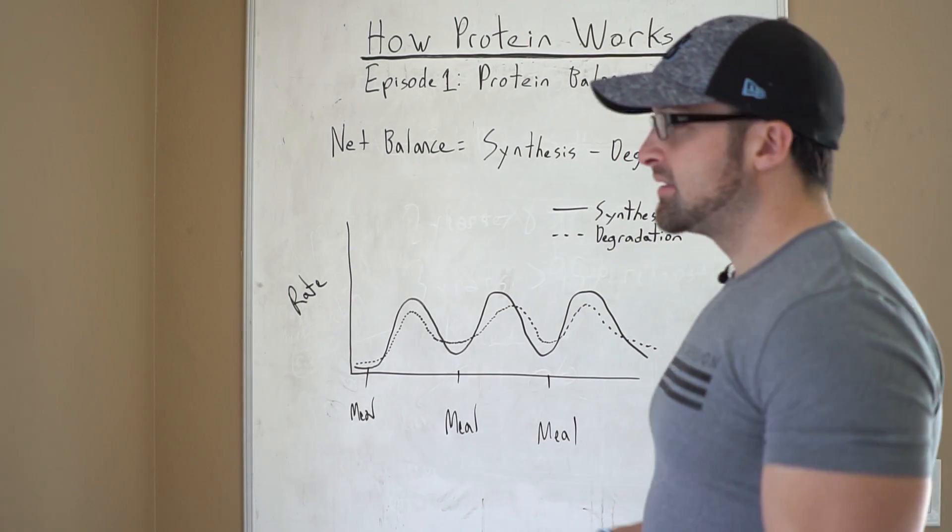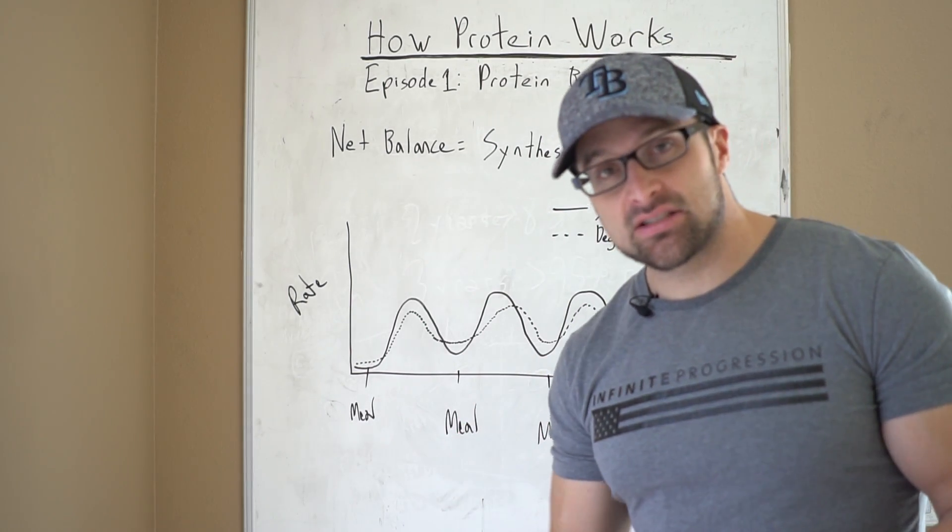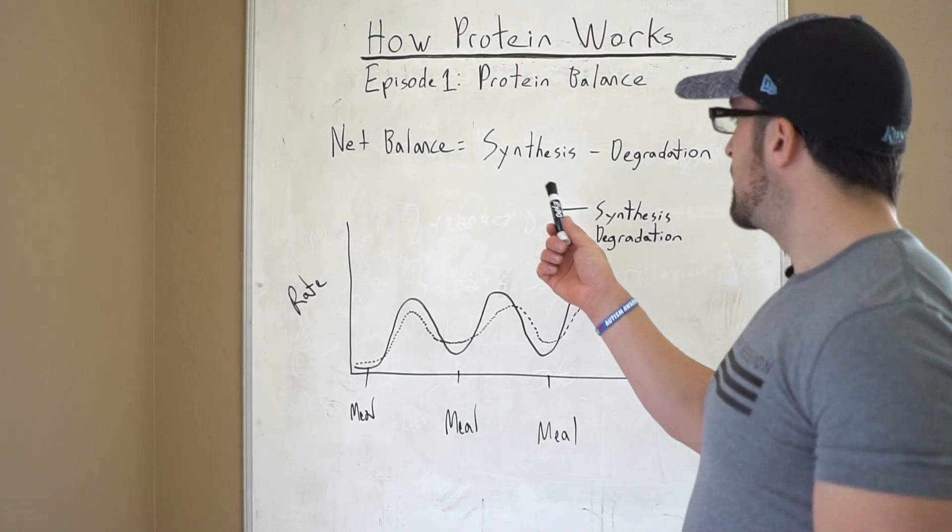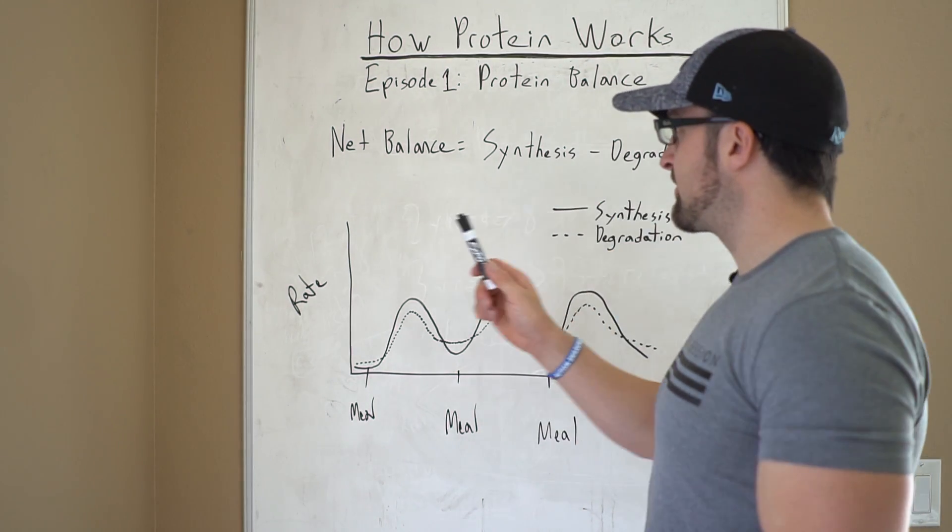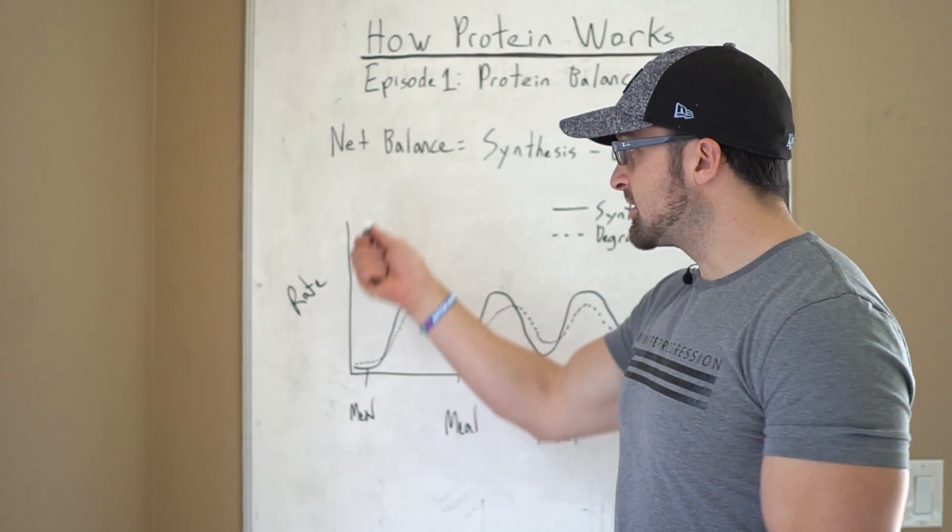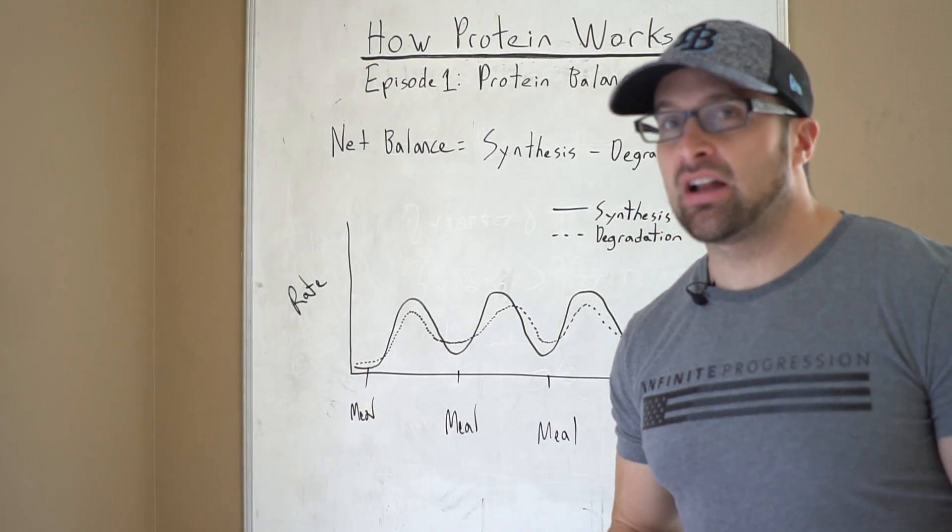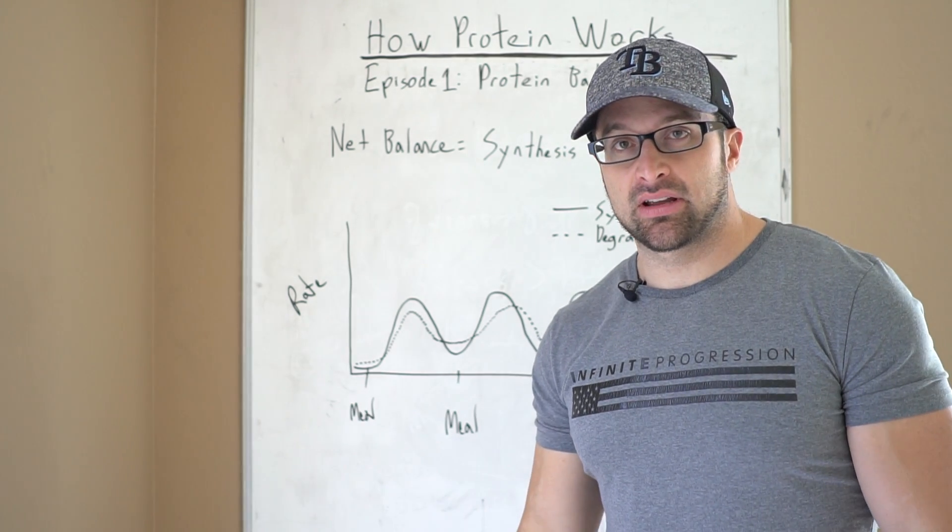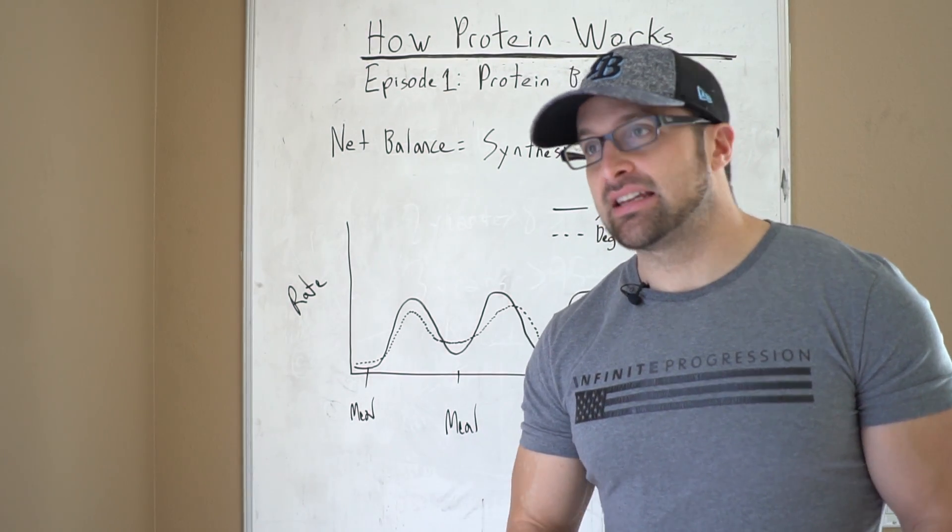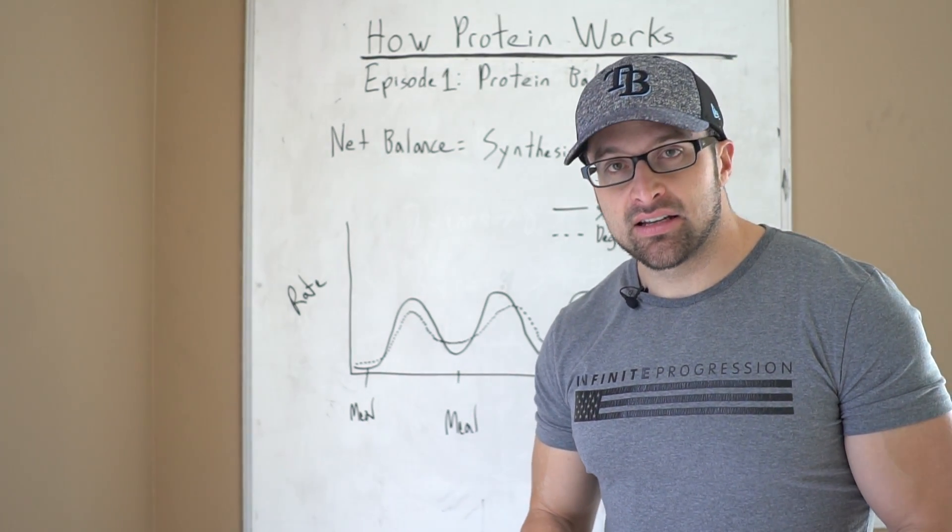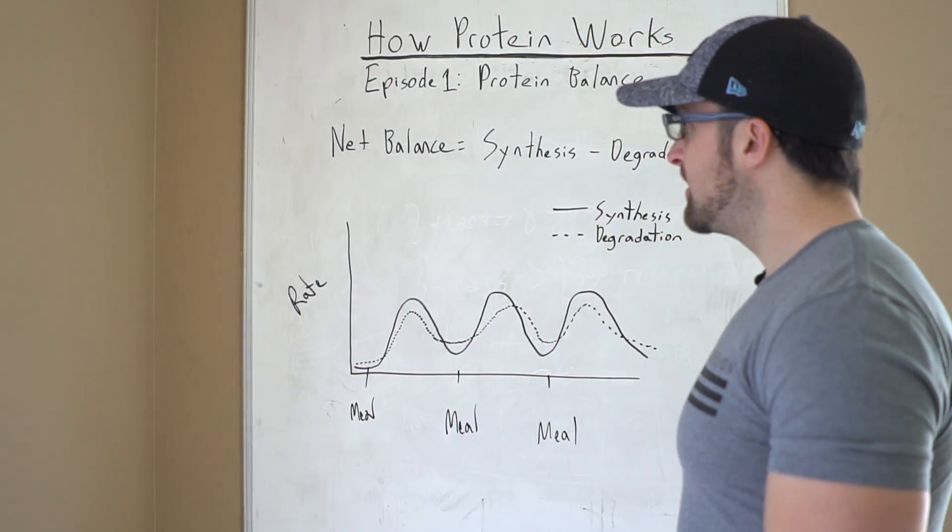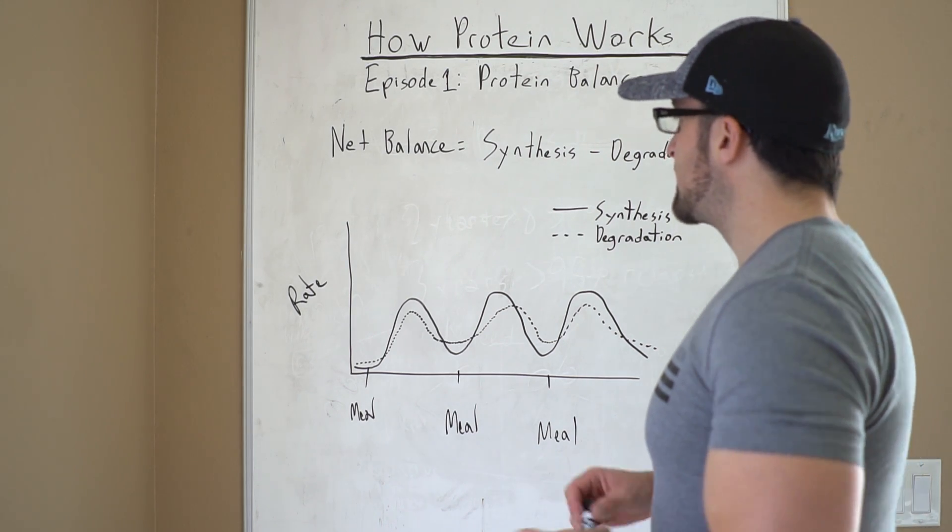So when we talk about muscle, we're talking about synthesis or degradation. We're talking about protein, muscle protein synthesis and muscle protein degradation and muscle protein balance. Now muscle protein balance is going to typically follow what the rest of your body is doing. If you're in a catabolic state and your liver is losing a lot of protein mass, you're probably not going to be building muscle.